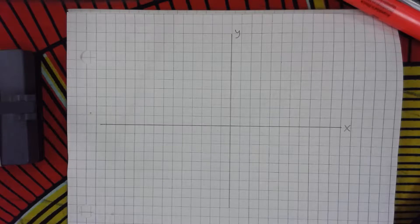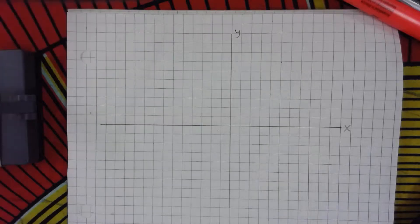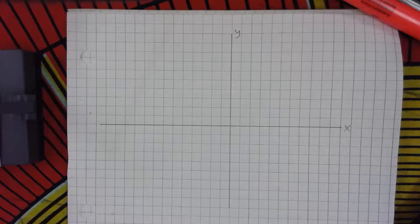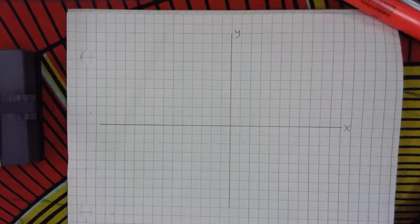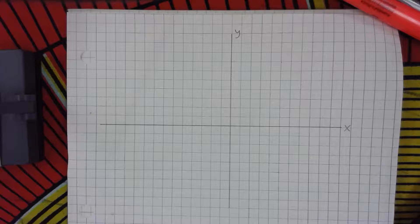Hi, as promised I'm going to make you a couple of videos. This one is with regards to the question on the handout: find the angle where the two lines meet. The two lines were y equals 2x minus 1 and y equals one-half x plus 2. So obviously we want to start by drawing the lines.